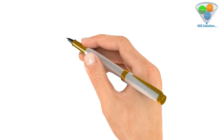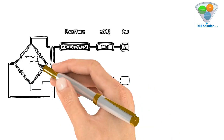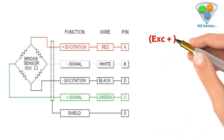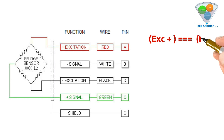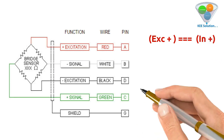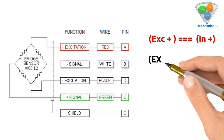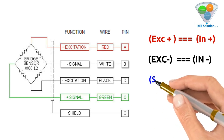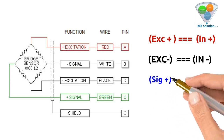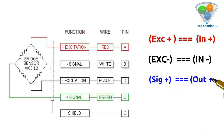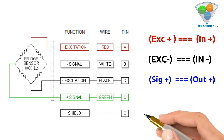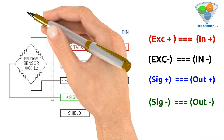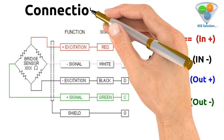We face many problems connecting a load cell to a controller or display or indicator because different brands have different nomenclature. These are some common nomenclature: excitation, signal, and input/output details. In the bridge circuit there is excitation positive, excitation negative, signal positive, and signal negative.